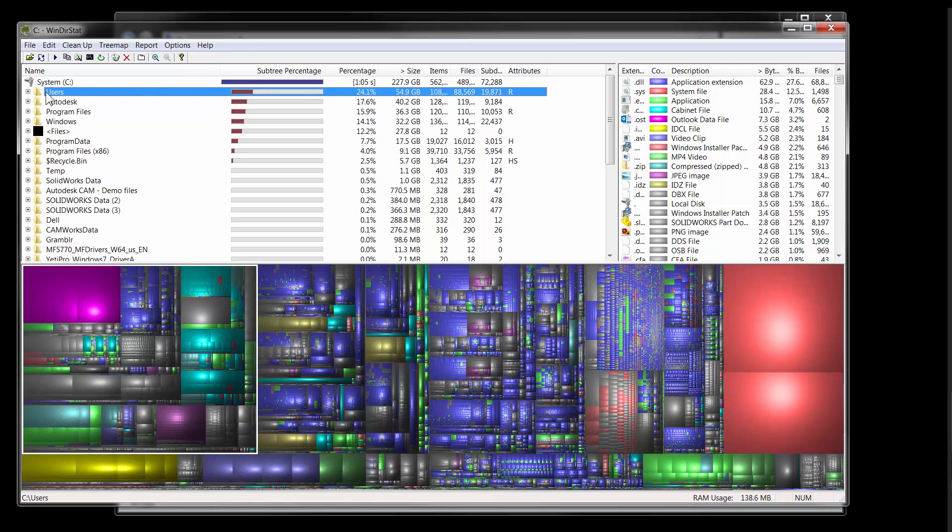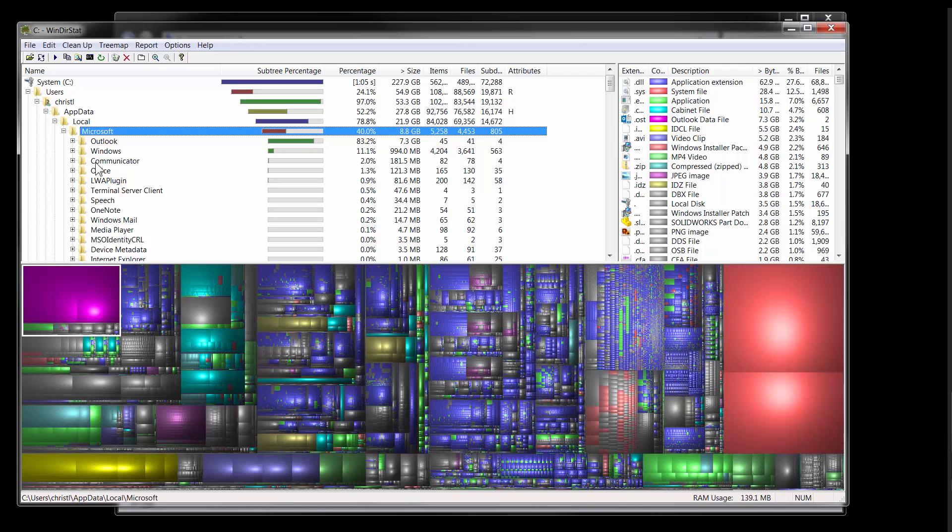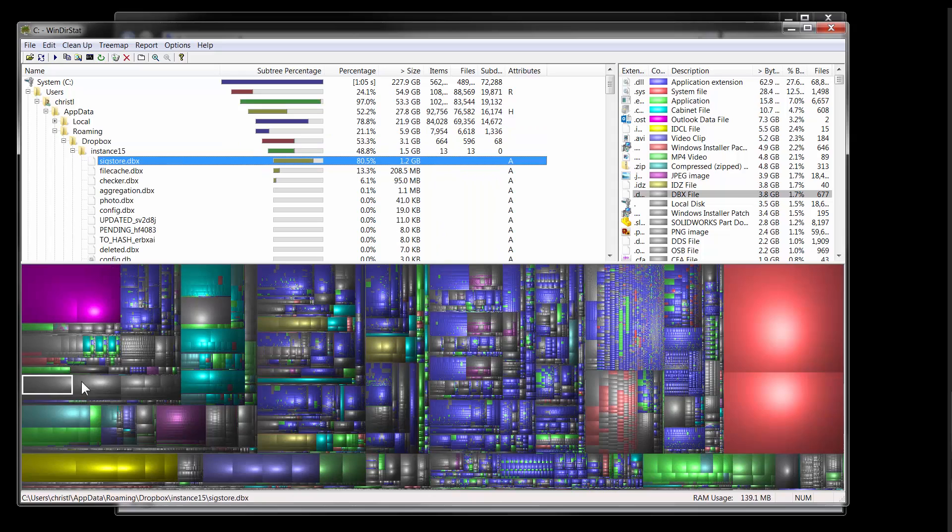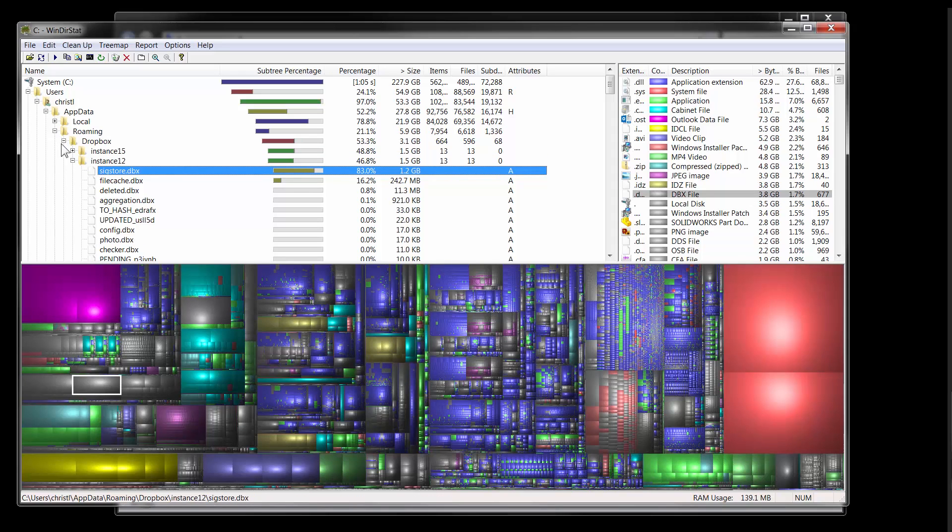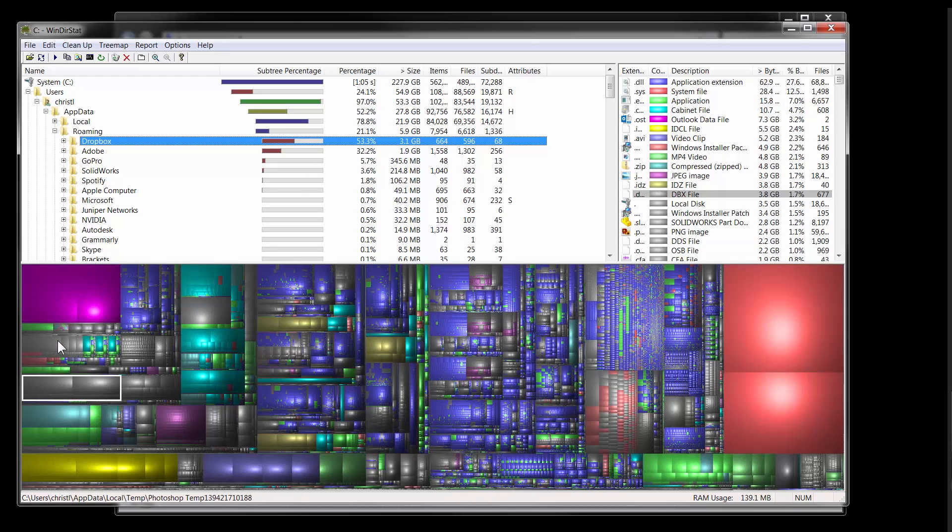And then you can just go through, find out what is taking up most space. And some of the stuff you might need, but some of the stuff like temporary files or other hidden things that you maybe don't use, you can pull right out of here. And from right here, you can actually just delete it by right clicking. So it's a pretty neat program.